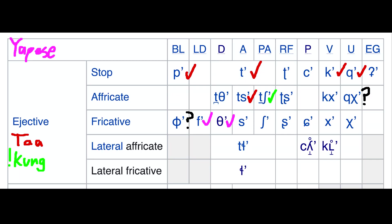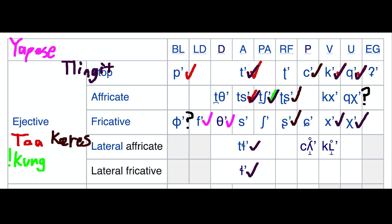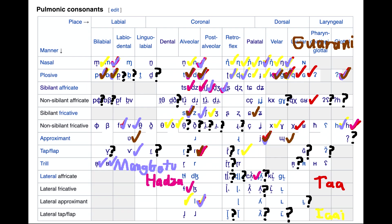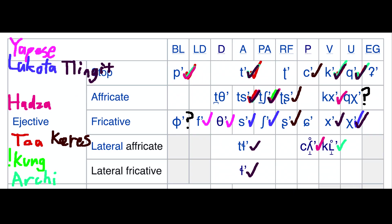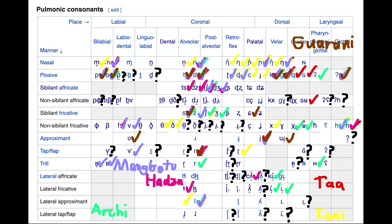Ejective time. Yapese has the labiodental and dental ejective fricatives. Tlingit has a lot of ejectives, but most of them overlap, save for the velar ejective fricative and the voiceless alveolar lateral affricate. Keres provides the palatal ejective stop, the retroflex ejective affricate and fricative. Lakota has both the alveolar and post-alveolar ejective fricatives, as well as the uvular ejective fricative. Hadza is special in having the velar ejective affricate, the palatal ejective lateral affricate, and the voiceless palatal lateral affricate — a sound that was a pain to find. Archi has a lot of phonemes, including the velar ejective lateral affricate, the voiceless velar lateral affricate, the voiceless epiglottal trill, the epiglottal stop, the voiced and voiceless uvular fricatives, and both the voiceless and voiced velar lateral fricatives. Thank you, peoples of the Caucasus.